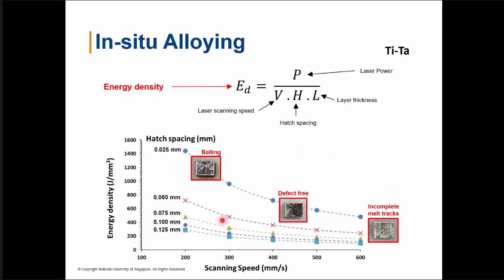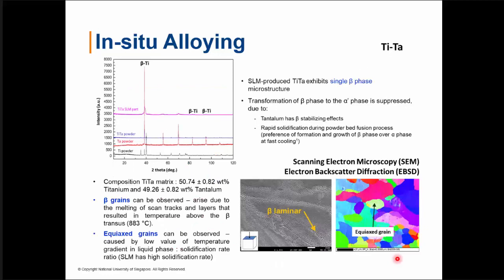Like any trial with a new material, we need to obtain optimized parameters — the recipe — for each material. We mainly vary four key parameters: laser scanning speed, hatch spacing, layer thickness, and laser power, consolidated as energy density. The ideal outcome is a defect-free part, quantified by comparing the part density to the theoretical density. Defects that can occur during 3D printing include incomplete melt tracks from insufficient energy input, and balling effects caused by unstable melt from excessive energy causing turbulence within the melt pool.